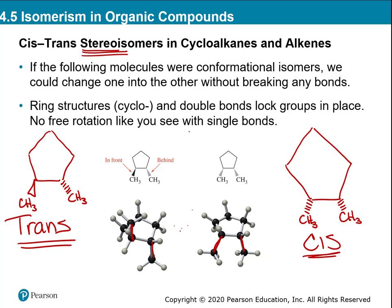If I had something like this with only one hanging group, you don't name that cis or trans — you only use cis and trans if there are two hanging groups on different carbons of the ring. Then you identify which way they're going.